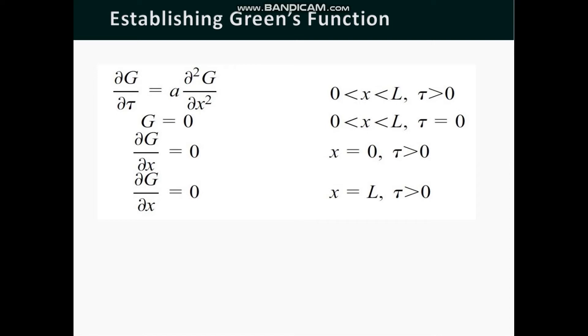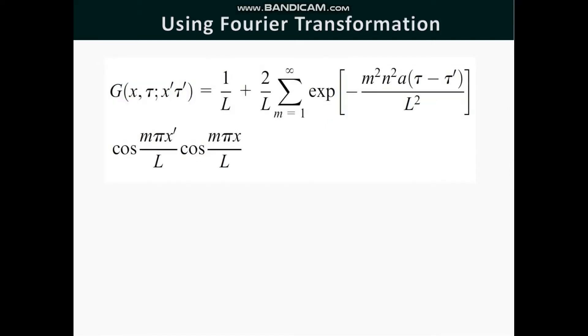Applying the method of separation of variables, coefficients of the solution can be calculated from initial conditions of the equation. Then Green's function of the problem can be obtained using Fourier expansion method. G(x,τ;x',τ') = 1/L + 2/L Σ(m=1 to ∞) exp(-m²π²α(τ-τ')/L²) cos(mπx'/L) cos(mπx/L).